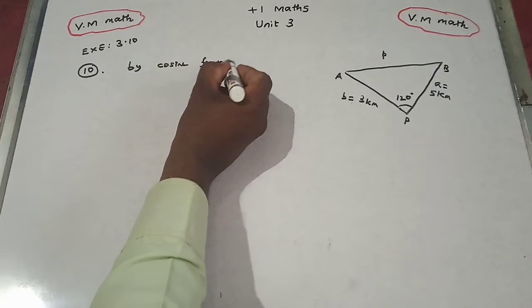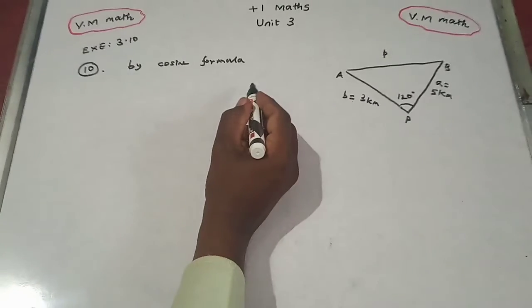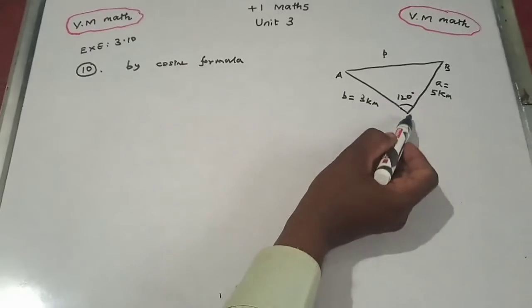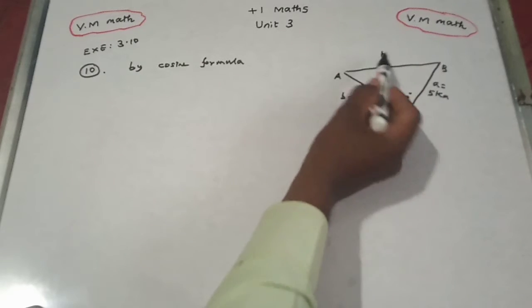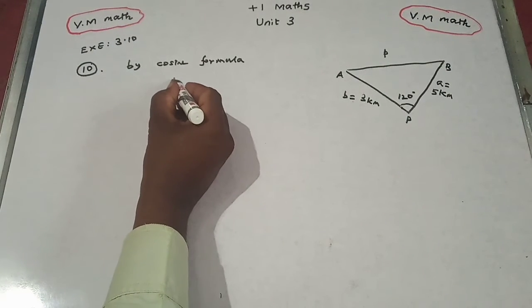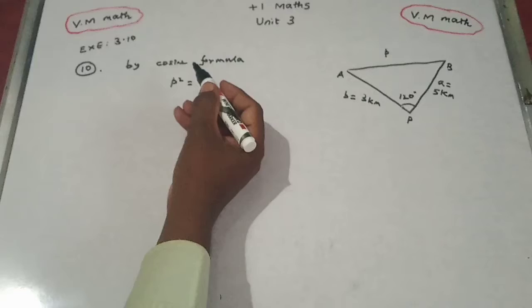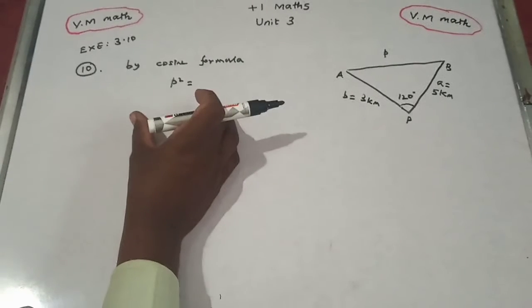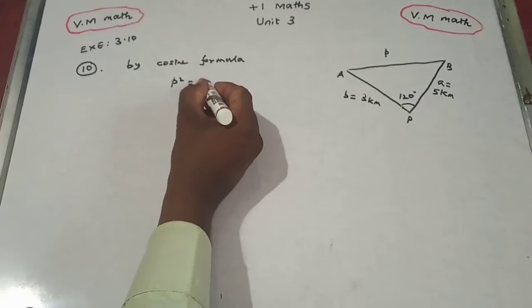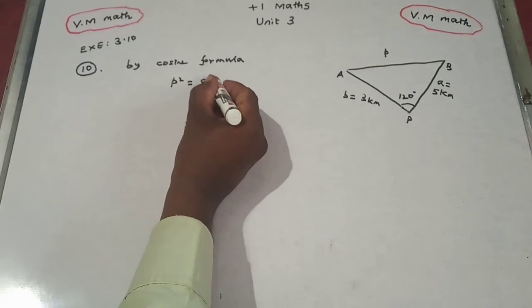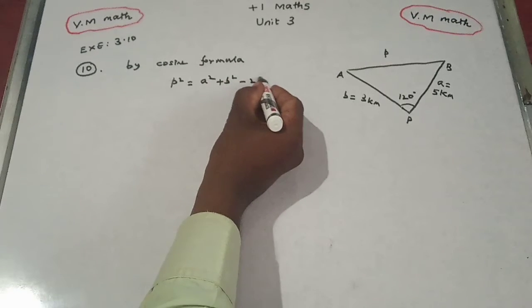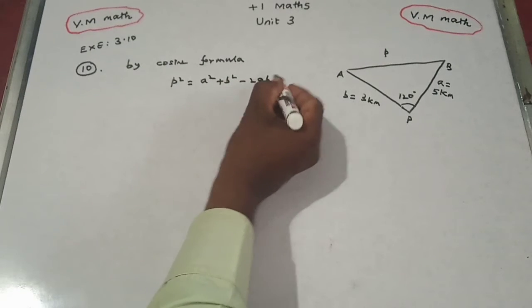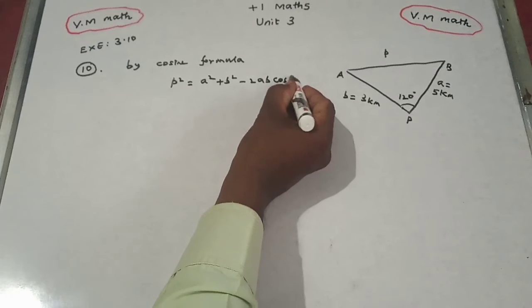Using the cosine formula: p² = a² + b² − 2ab·cos(P), where P is the angle at vertex P.